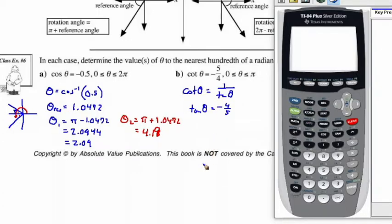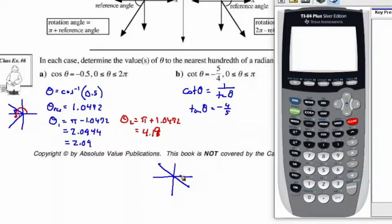So where is tan negative? Tan is negative in quadrant 2 and in quadrant 4. But take a look at the domain — it only goes to pi. So we're only concerned with quadrant 2, and the quadrant 4 solution is disregarded. So let's find the reference angle.